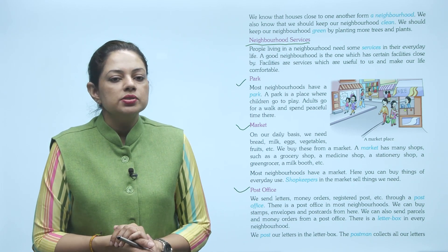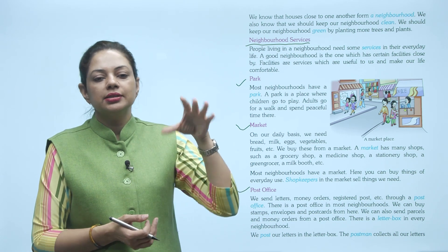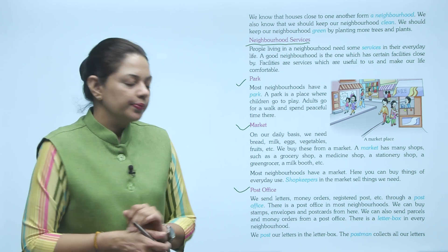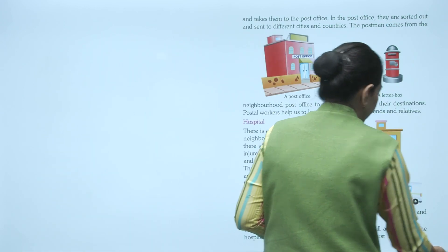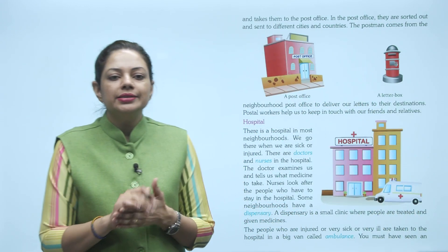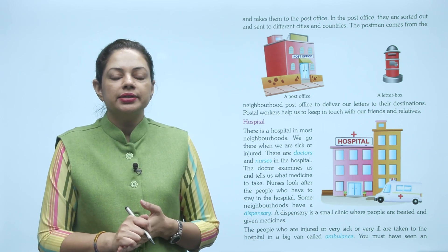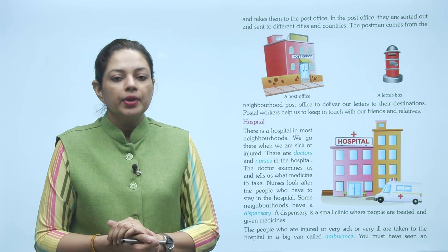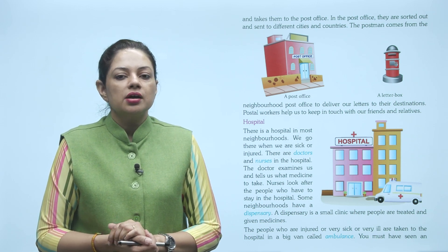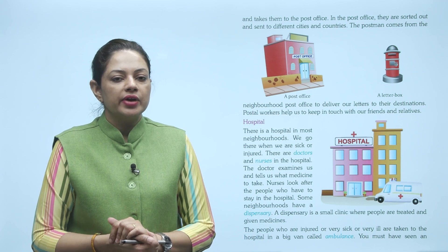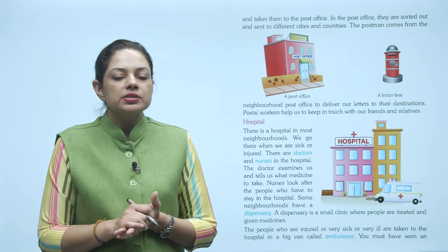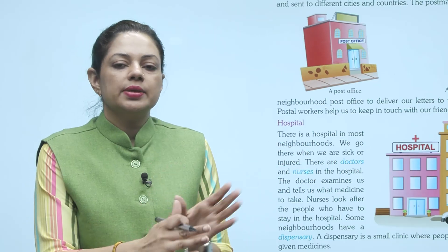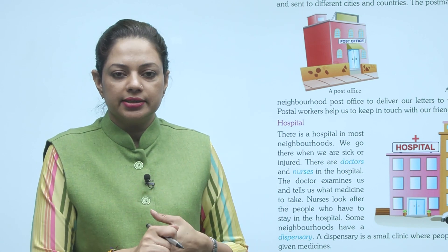We post our letters in the letter box. Letter box mein hum letters daalte hain. The postman collects all our letters and takes them to the post office. Phir postman saare hamare letters ko nikaal lete hain aur post office le jaata hai. In the post office, they are sorted out and sent to different cities and countries. Post office mein unko sorted kar dete hain — kis city mein kaunse parcel jaane, kaunse letter jaane — unko alag alag kar dete hain.